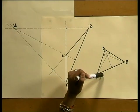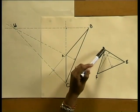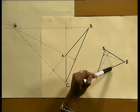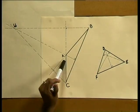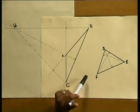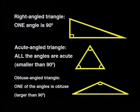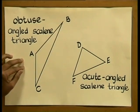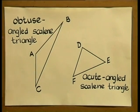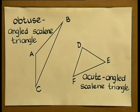In this triangle we have constructed altitudes — lines from the vertex perpendicular to the opposite side — and here the altitudes intersect on the inside of the triangle. What makes triangle ABC different from triangle DEF? Have a look at the size of their angles. Triangles can be right-angled, acute-angled, or obtuse-angled. Triangle ABC can thus be called an obtuse-angled scalene triangle, and triangle DEF can be called an acute-angled scalene triangle.